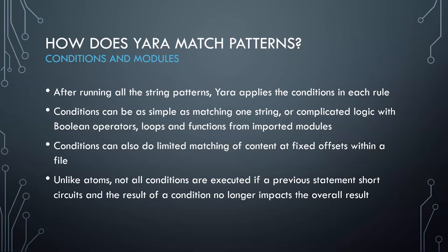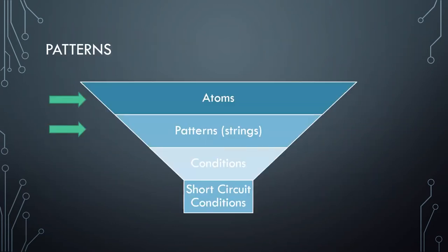Unlike atoms, not all conditions are executed if a previous statement short-circuits the result. Short-circuiting means if you have conditions A and B and C, and A is true but B is false, C will never get executed — meaning you're running less work and performance will be better.